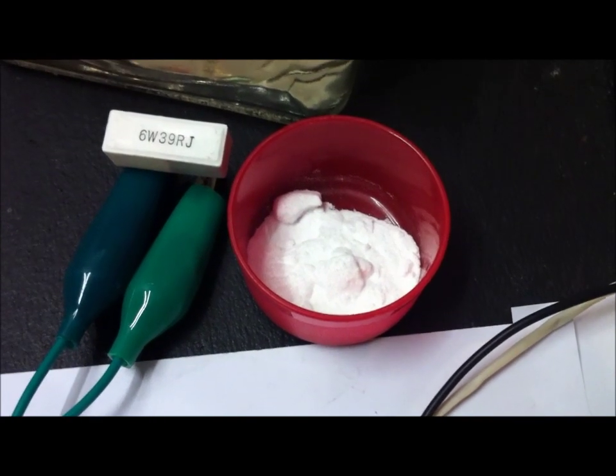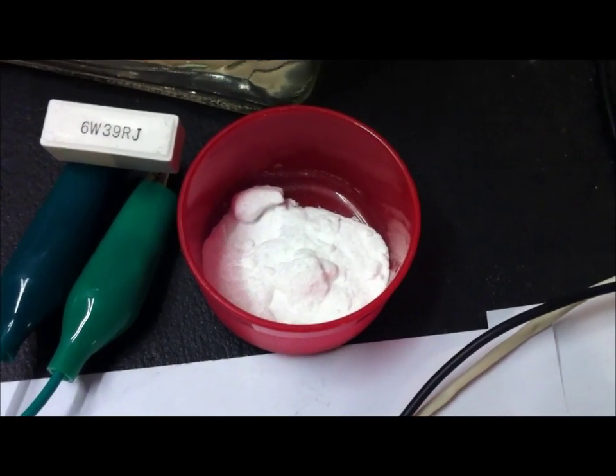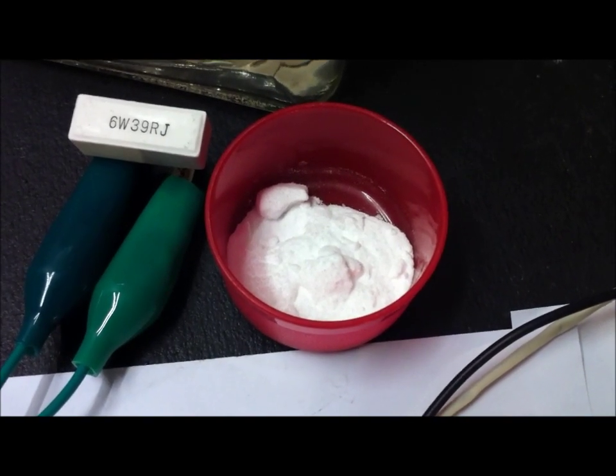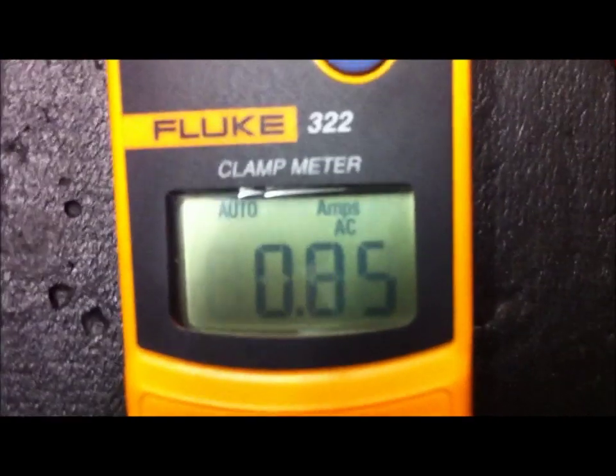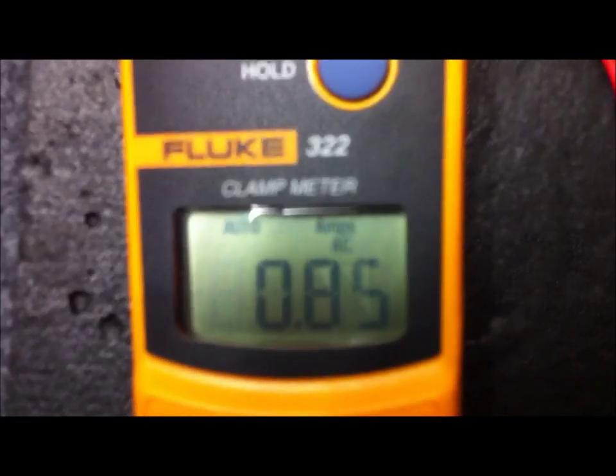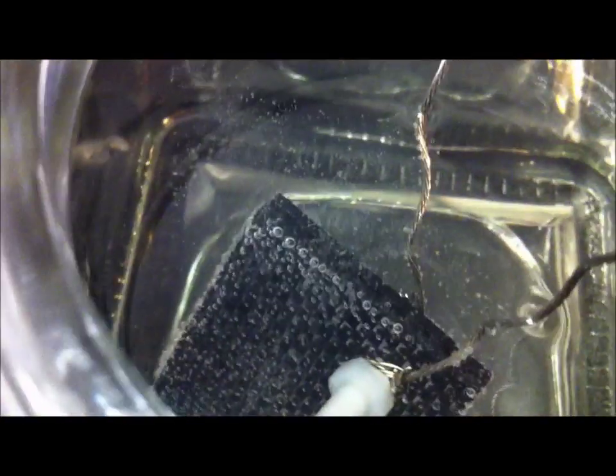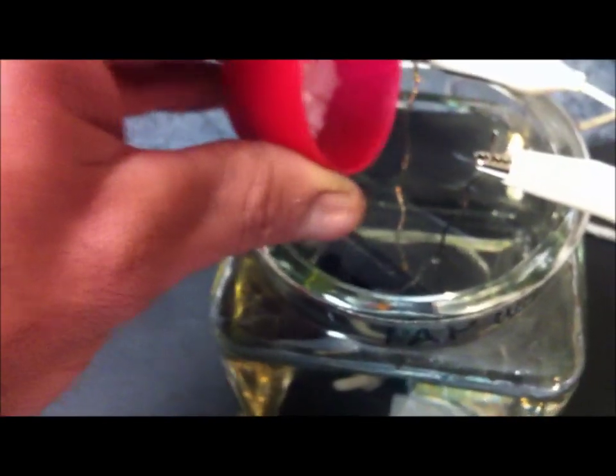Just before I forget, I've got here in this little pink container a teaspoon of baking soda. Right now we're still at 850 milliamps. Light's still going. Everything's still working. Still producing HHO. Now let's just see what happens to the current draw when we add the baking soda.